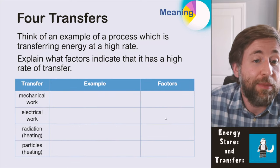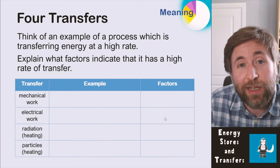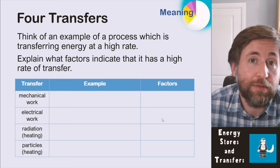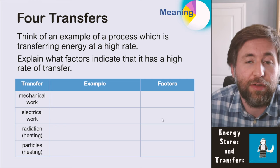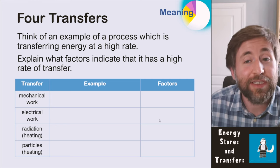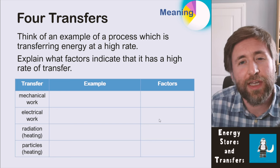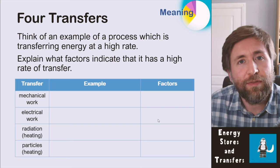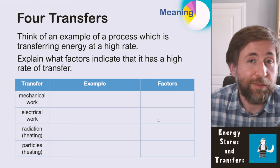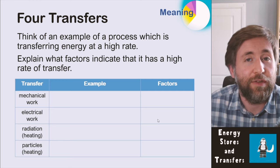The four transfers are: mechanical work, electrical working, radiation (heating by waves), and heating by particles (conduction and convection). Pause the video here. Think of an example of a process that transfers energy at a high rate, and explain what factors make your chosen process a high rate of energy transfer.